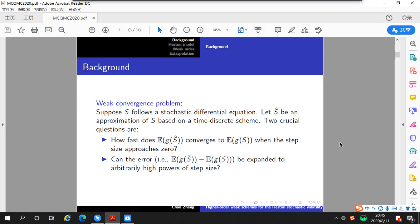Suppose S follows a stochastic differential equation, and we let S hat be an approximation of S based on a time-discrete scheme. Then there are two crucial questions. First, how fast does the approximated value converge to the true expectation when the step size approaches zero? This is the problem of weak convergence. Second, can the error be expanded to arbitrarily high powers of step size? If we can, then we can apply extrapolation to achieve weak approximation of any desired order.